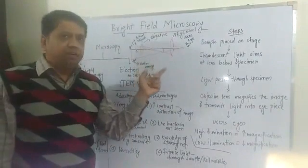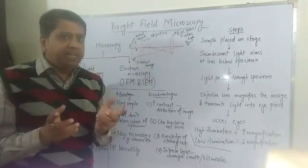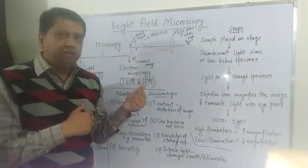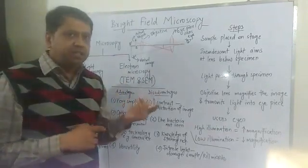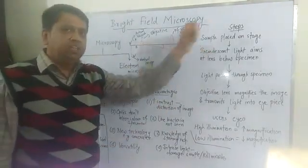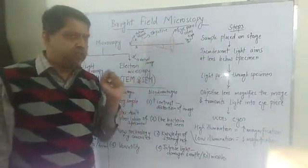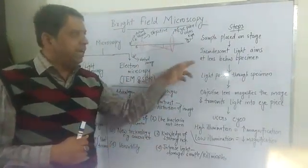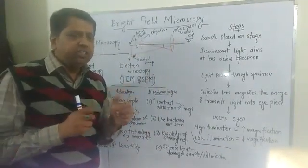The name 'bright field' comes from the fact that in this microscopy the background is bright and the specimen appears dark. Now let us discuss its steps. First, the sample is placed on the stage, and incandescent light is aimed at the lens just below the specimen, so the specimen gets illuminated.